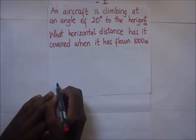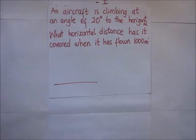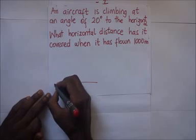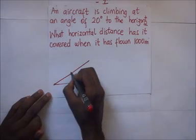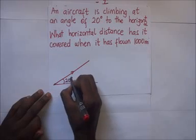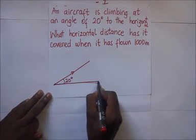So we are having an aircraft. This is the horizontal distance. They are telling us that this aircraft is climbing at an angle of 20 degrees to the horizontal. So in our sketch, if this is the starting point, it is moving up at 20 degrees to the horizontal. This is the horizontal we are talking about.